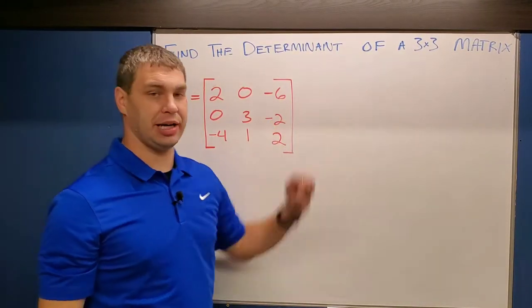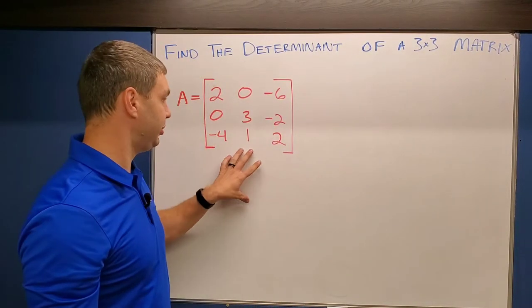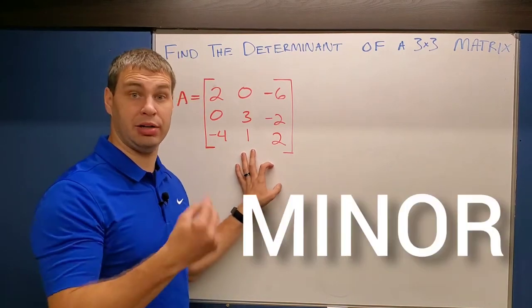There's lots of different ways to find the determinant of a three by three matrix, but today we're going to find the determinant of this one by using what's called minors or sometimes minor expansion.